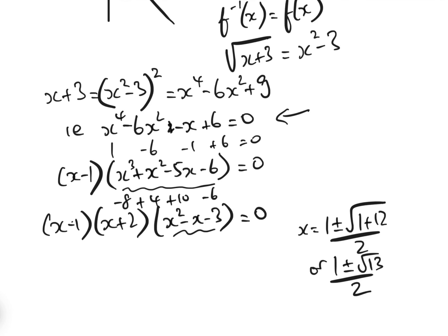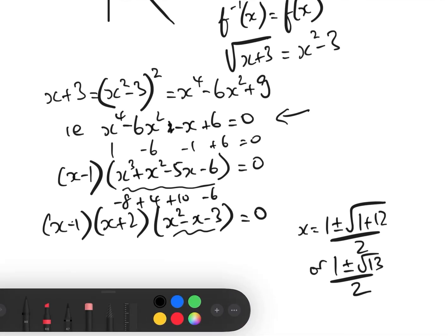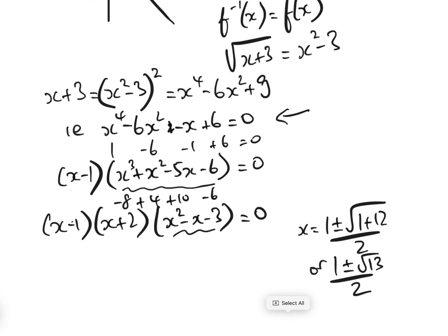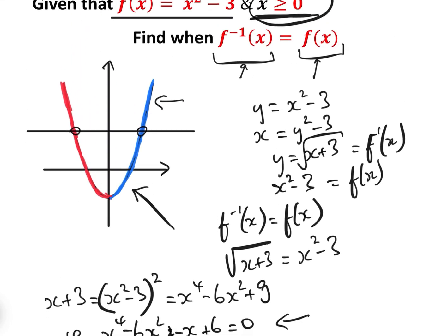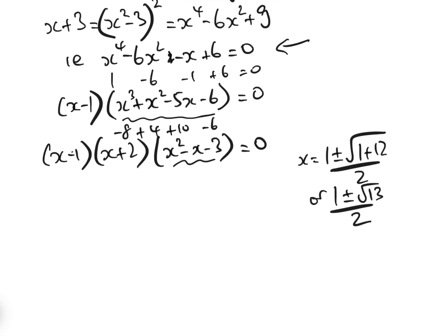Now in actual fact, three of these solutions are invalid, so let's just have a quick look why they're invalid. We've already got the restriction that x is greater than or equal to 0, and so therefore we know that x equals minus 2 can't be a solution,